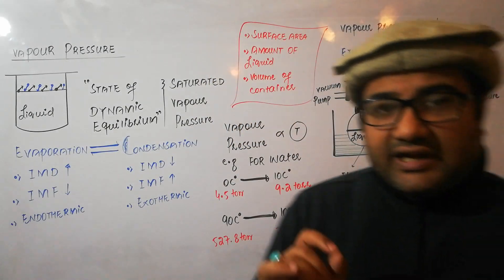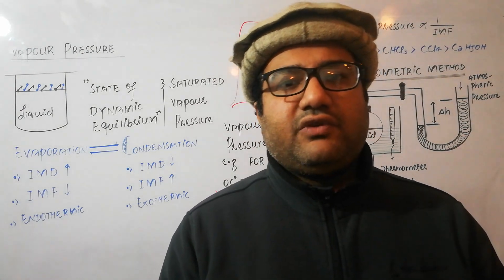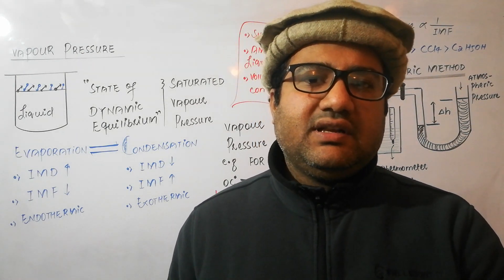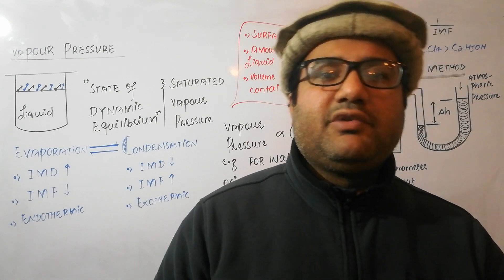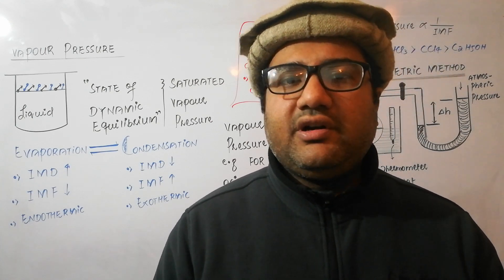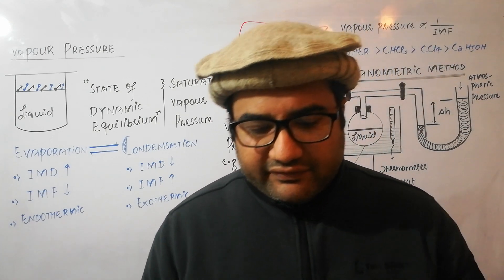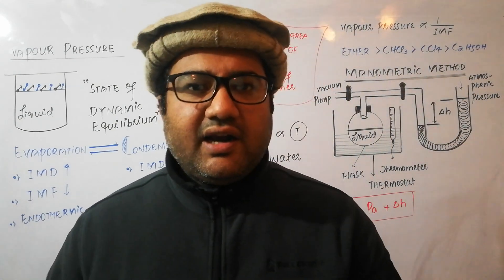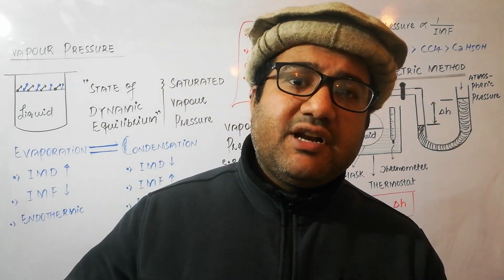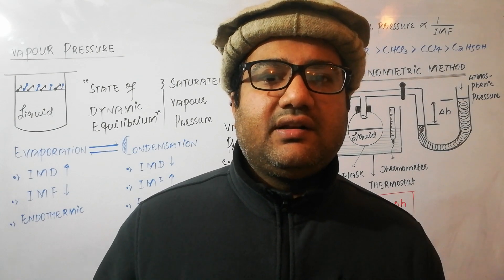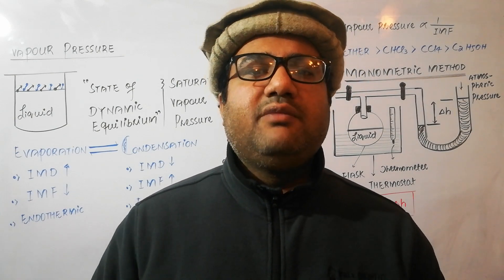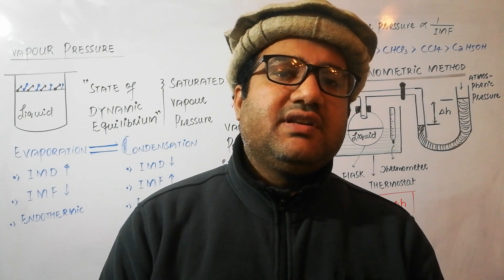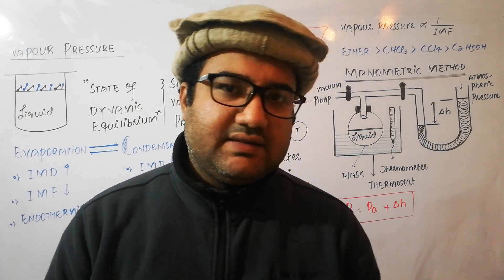For example, one liter of water and two liters of water, both at room temperature, will have equal vapor pressure — their quantity does not matter. Similarly, one liter of water in a small container and one liter in a large container at room temperature will both have equal vapor pressure. The volume of the container makes no difference.